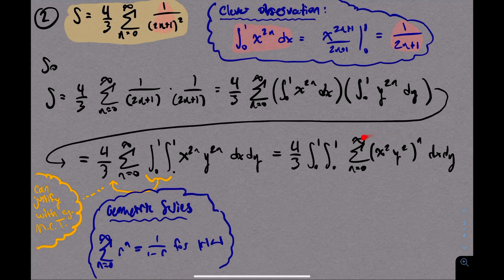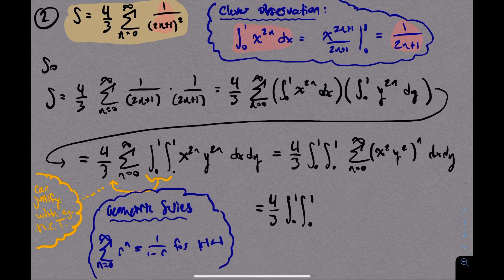Well, look what we have here. This is a geometric series. The ratio is x squared times y squared. And because I'm integrating over 0 to 1 cross 0 to 1, x and y are both between 0 and 1, so their product, and then the square of their product, is also between 0 and 1. So that ratio is always smaller than 1 in absolute value, which means that infinite series converges. And by this geometric series formula, it converges to 1 over 1 minus x squared y squared.